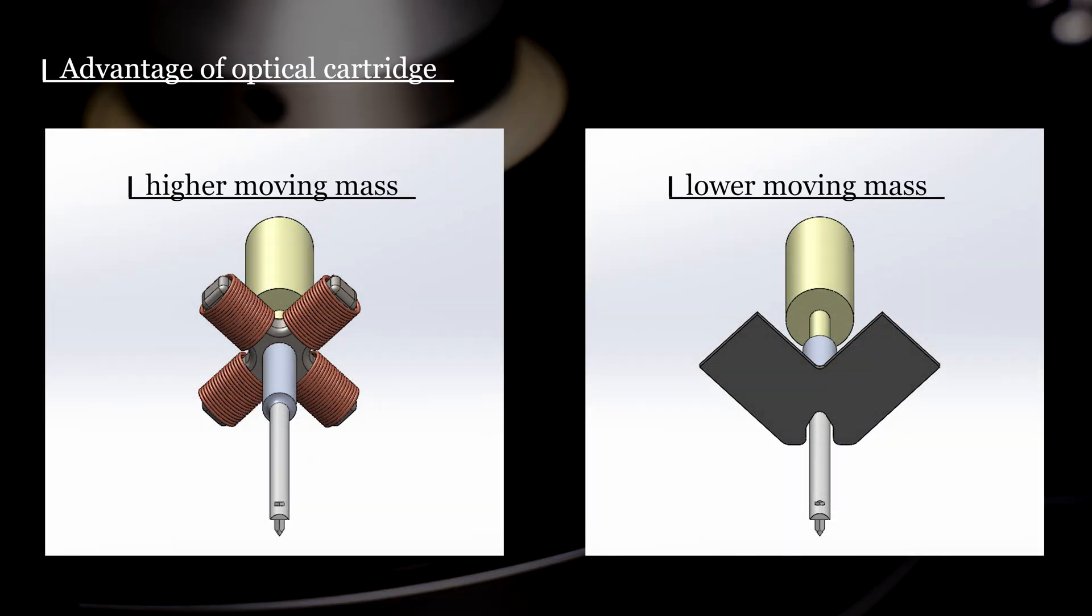The magnet and coil are heavier than the very thin, 100 micron, shading plate. This means the needle is harder to move compared to the one in an optical cartridge.